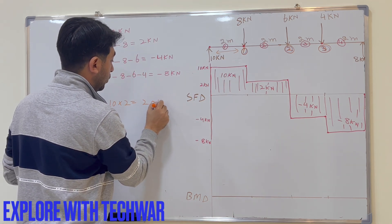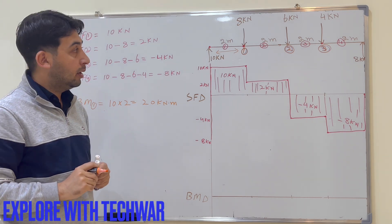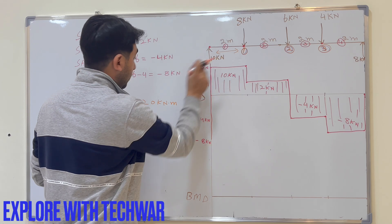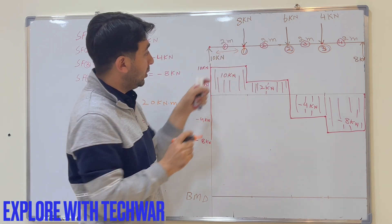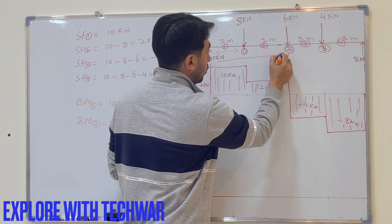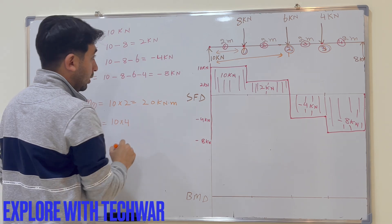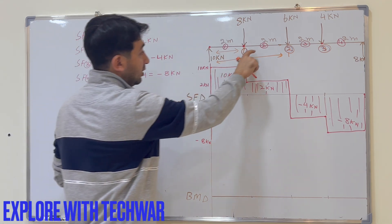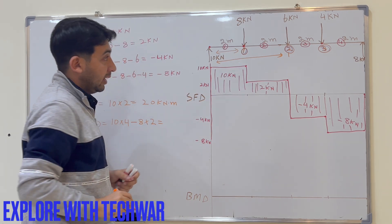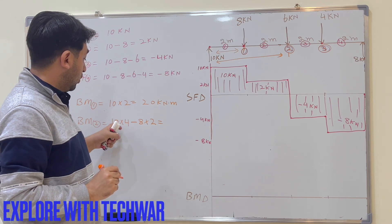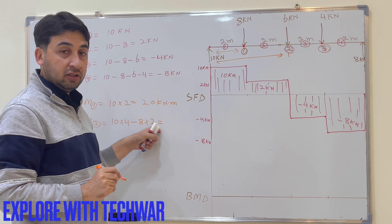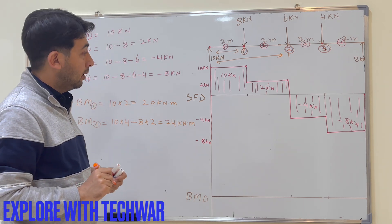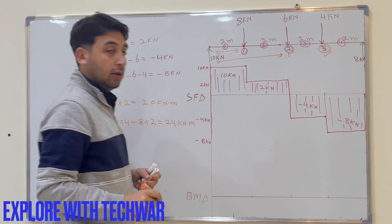Bending moment at point 2: 10 kN acts at a distance of 4 m, and 8 kN acts downward at a distance of 2 m from point 2. So BM = 10 × 4 minus 8 × 2 = 40 minus 16 = 24 kNm.